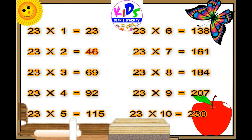23 fives are 115, 23 sixes are 138, 23 sevens are 161, 23 eights are 184, 23 nines are 207, 23 tens are 230.